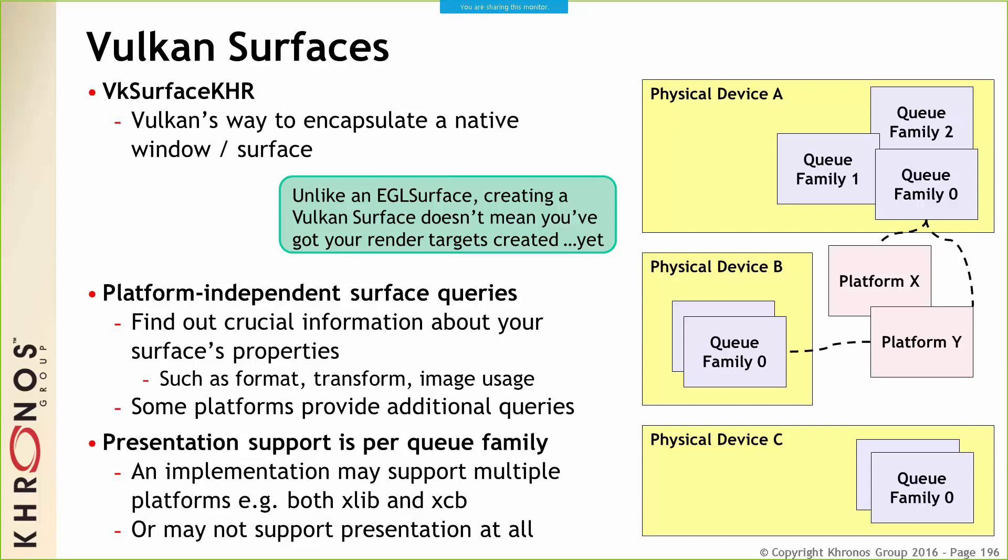The key thing is presentation support is dependent on a queue family. Each queue family — I've got three examples of physical devices — you can have multiple queue families in a physical device. Each one may or may not support presentation, and may or may not support presentation to a specific platform. Physical device A in this diagram has no presentation, so that can be a compute-only bulk implementation — you can't actually get to the screen. Whereas physical device B has a queue family that can actually hit two platforms. This is an example in the Linux world when you have both Wayland and X living alongside each other — you can have one Vulkan device that can support both.